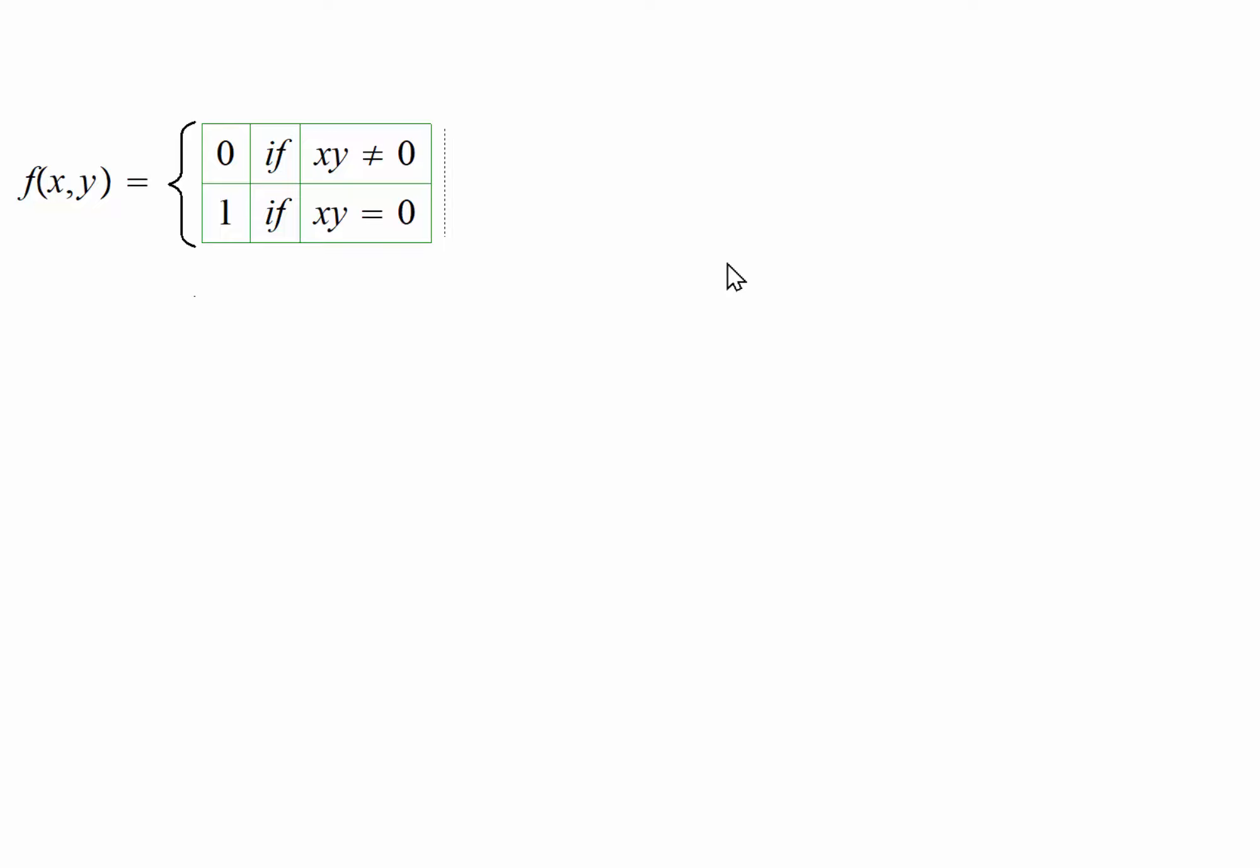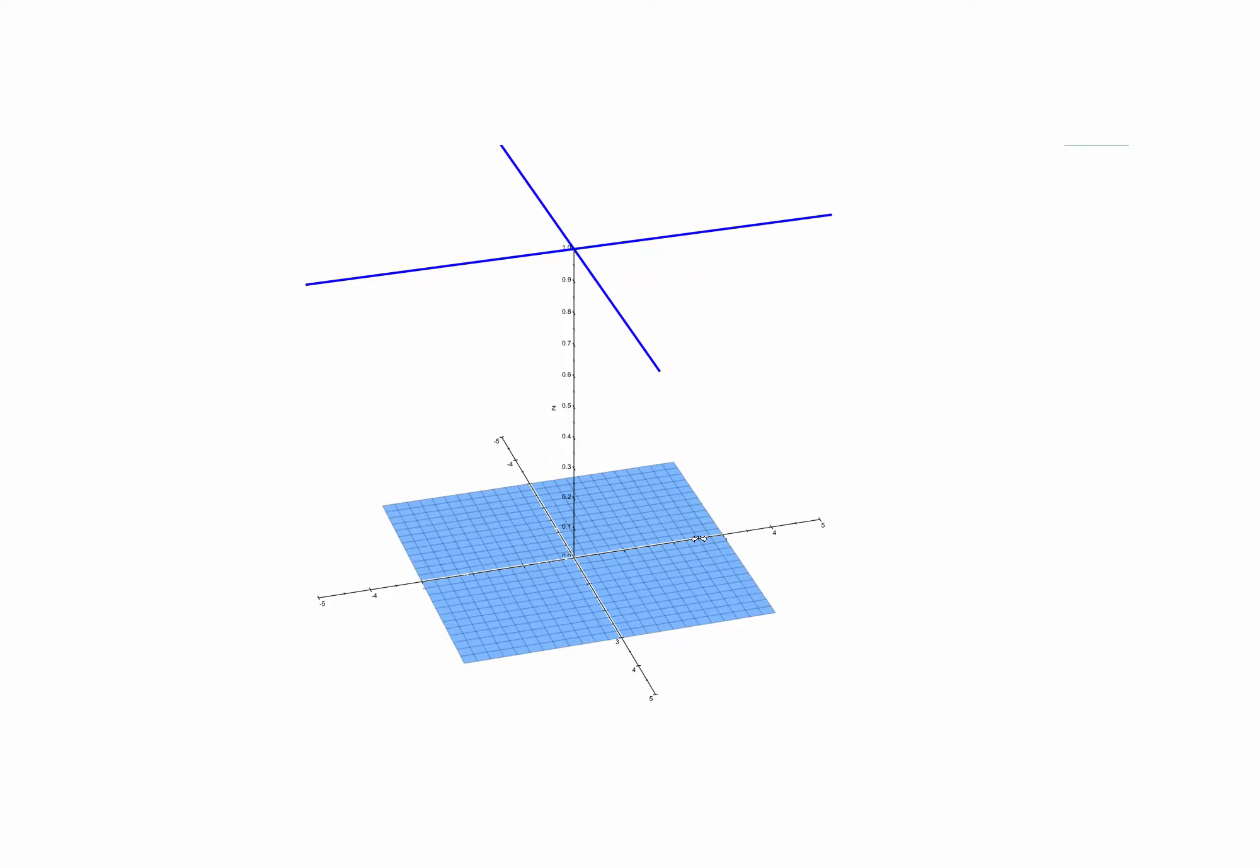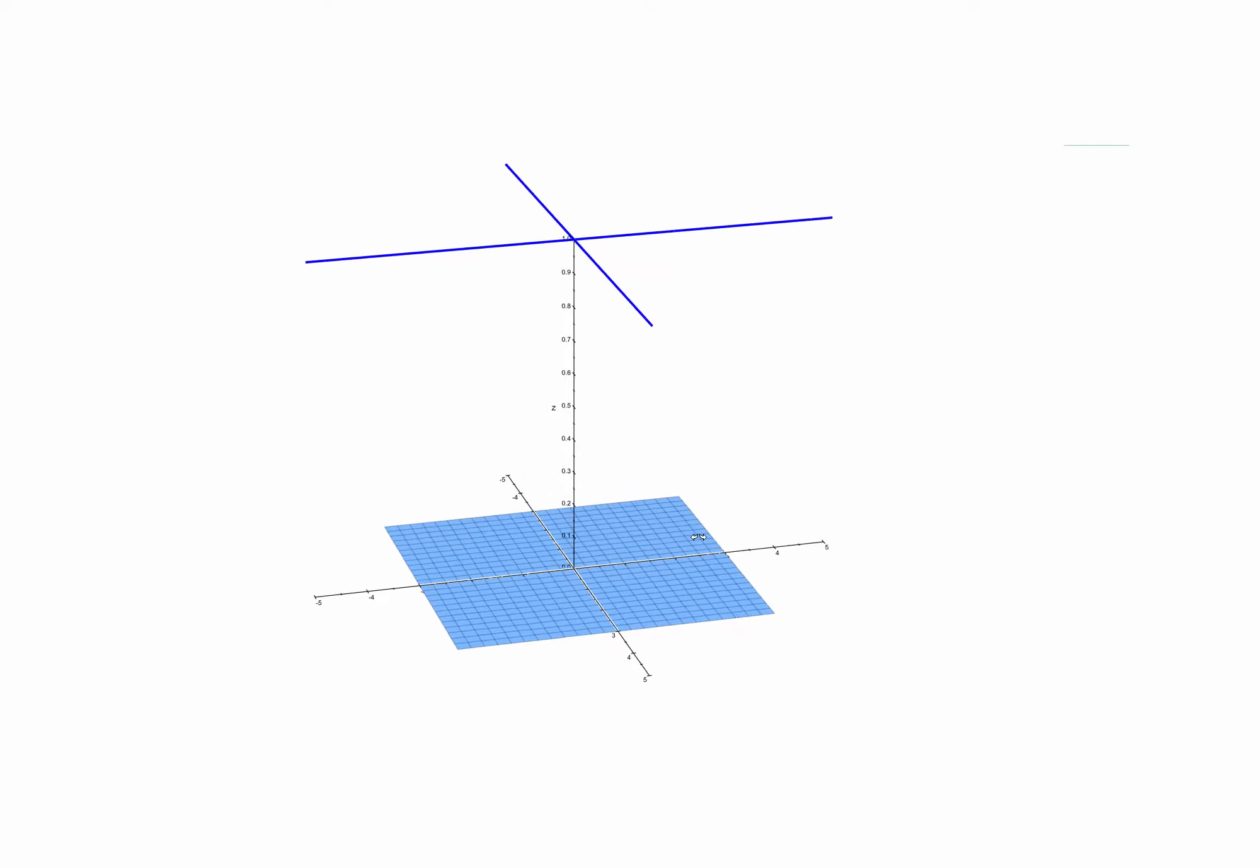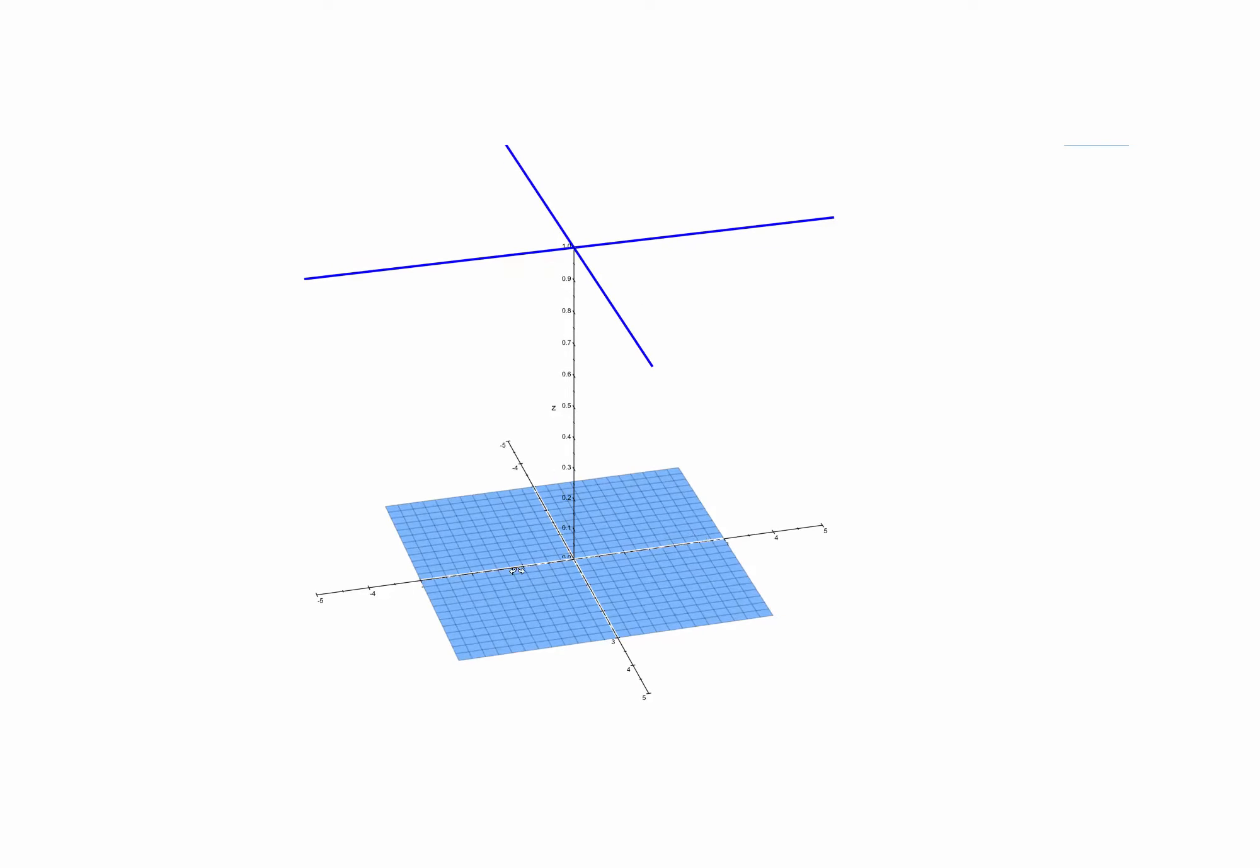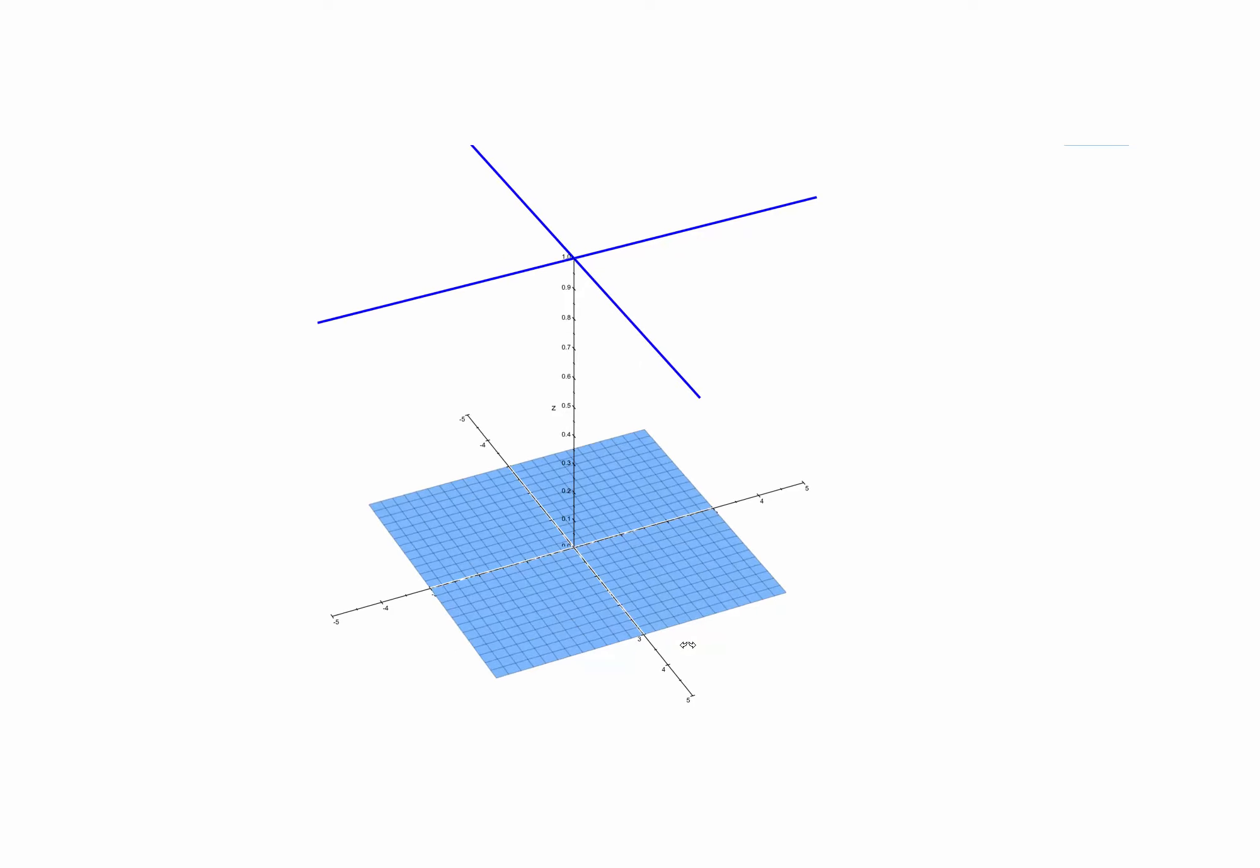Let me show you a graph. Here is the graph of the function restricted on the domain negative 3 to 3 for x, negative 3 to 3 for y, and 0 to 1 for z. You can see that along these lines where x or y is 0, the function takes on value 1. Otherwise, it's 0 all over.